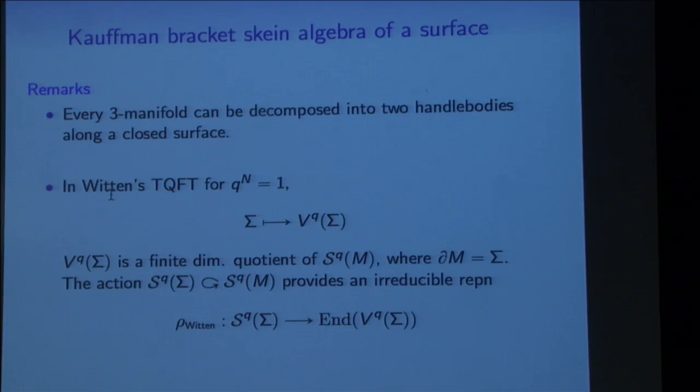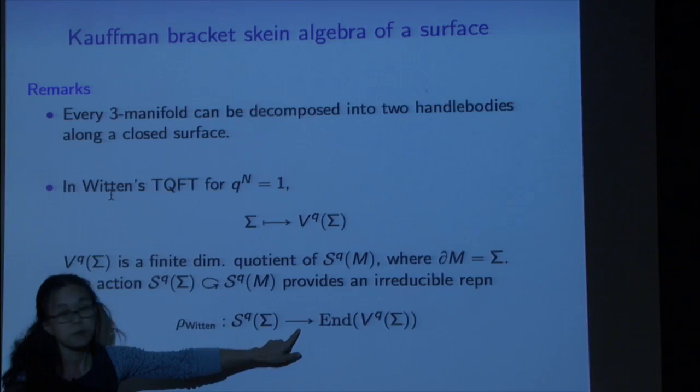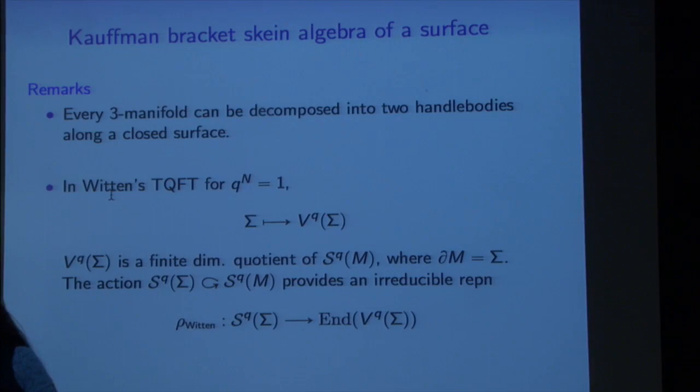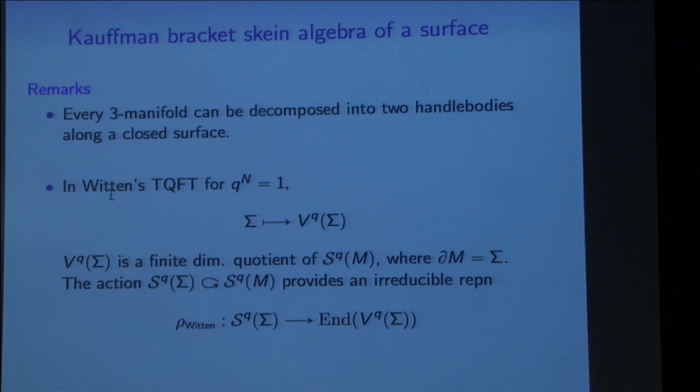If you have a link in the thickened surface, you slap it on where the boundary is, giving an action that yields an irreducible representation. Understanding how this irreducible representation and the algebraic structure of the skein algebra of a surface works would make many computations of quantum invariants much easier. There's also a relationship with the mapping class group: it factors through, making the skein algebra a generalization of the mapping class group action, where for every curve you want to do a Dehn twist on, you color it by a special skein and slap it on the manifold.